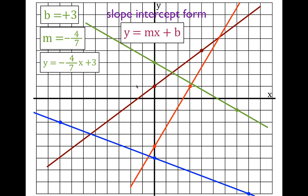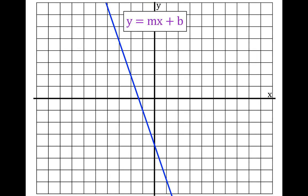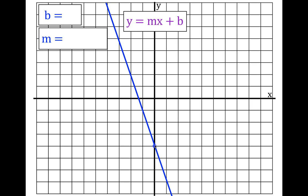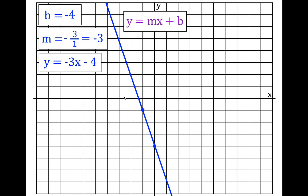Same thing over and over again. We have b and m again — this b crosses at minus four. The slope: the next place that line crosses the grid, we go up three and to the left one. Up three is positive three, left is negative one, so it's minus three over one. Three divided by one is three, so the slope is minus three. The equation is y equals minus three x minus four.